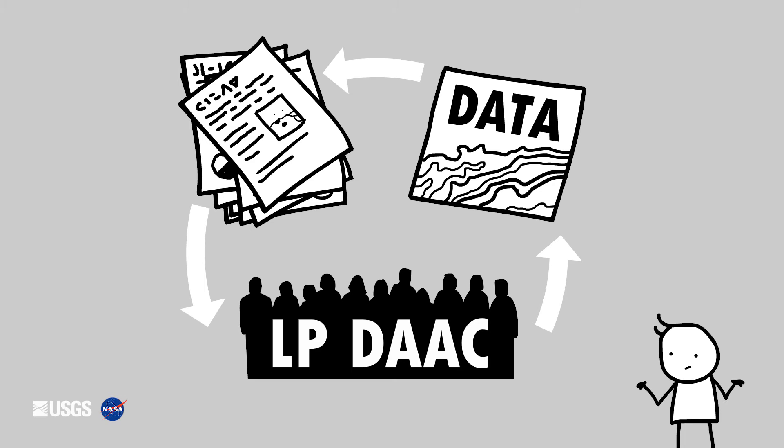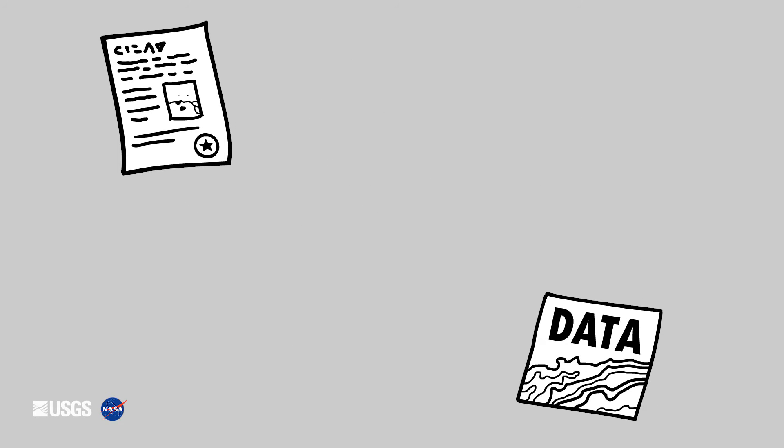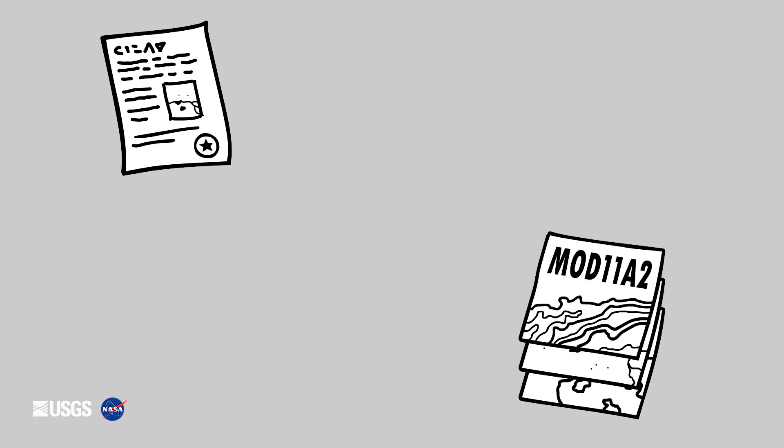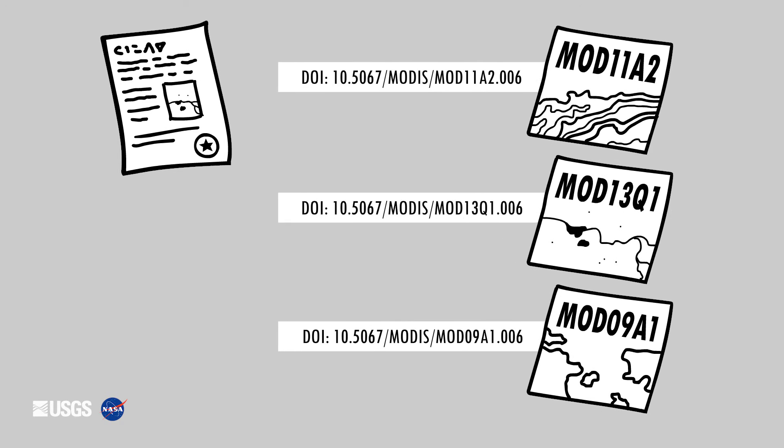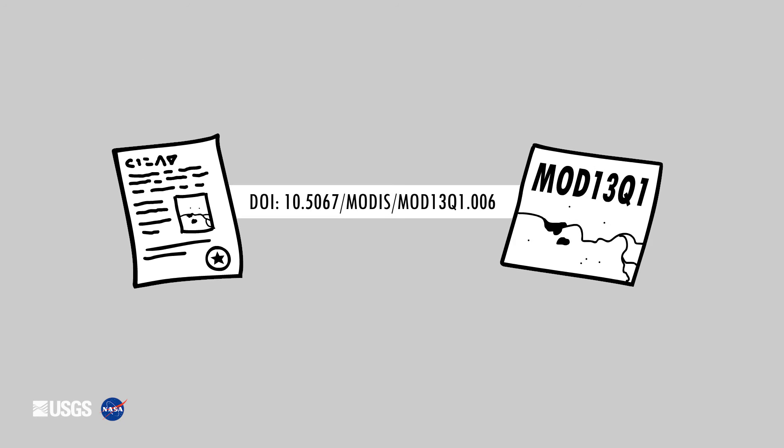How do we find your papers? It's simple. Each data product distributed by the LB-DAC has its own Digital Object Identifier, or DOI. When you include DOIs in your papers, it brings your research to our attention.